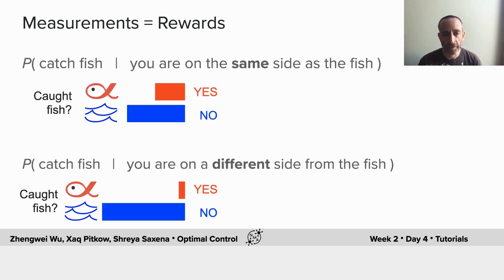So next, we're going to understand how we can assess where the fish are. That's using our measurements. What are our measurements? We're catching fish.